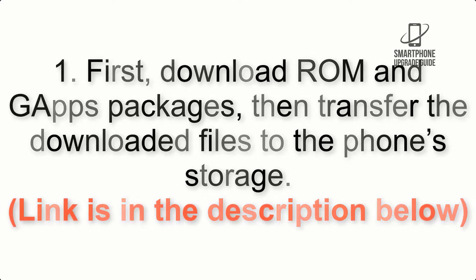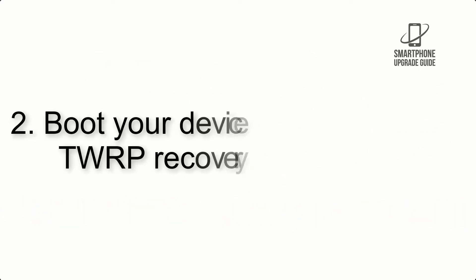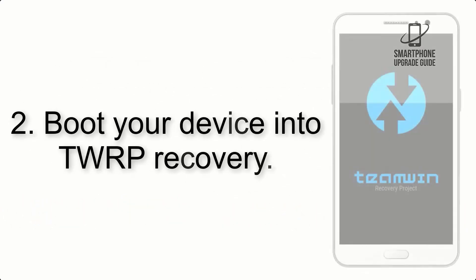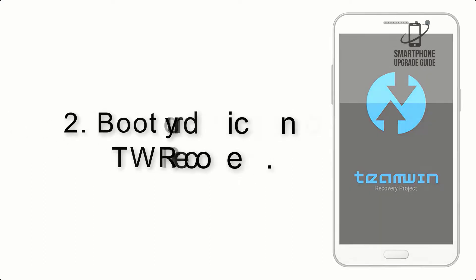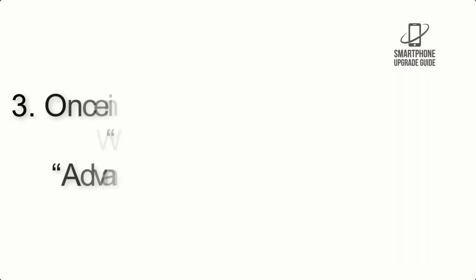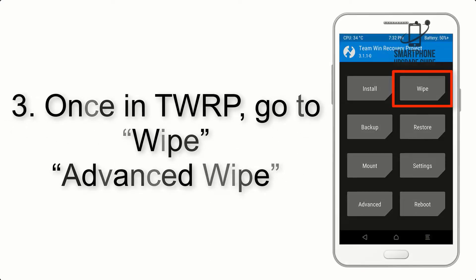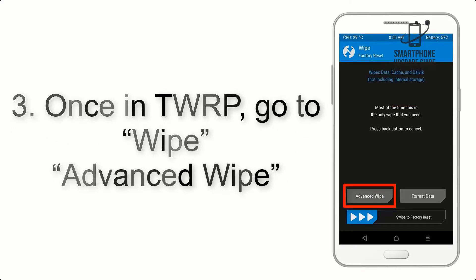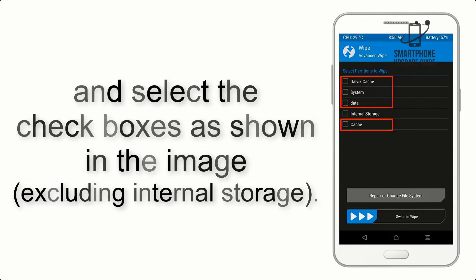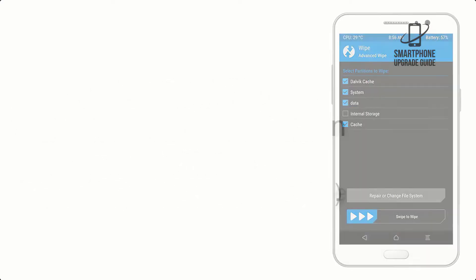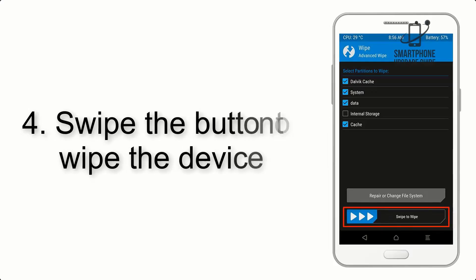The storage link is in the description below. Step 3: boot your device into TWRP recovery. Once in TWRP, click on Advanced Wipe and select the checkboxes as shown in the image, excluding internal storage.